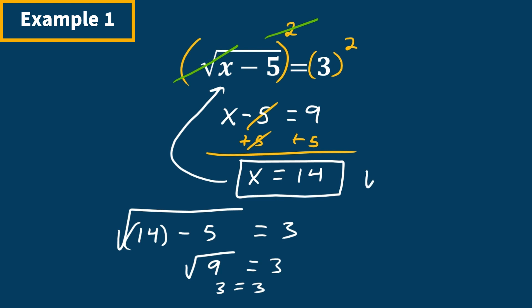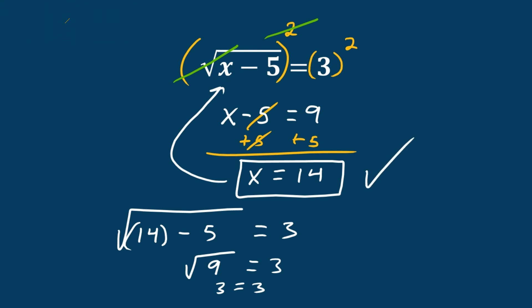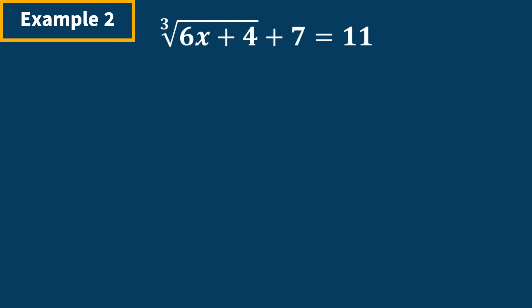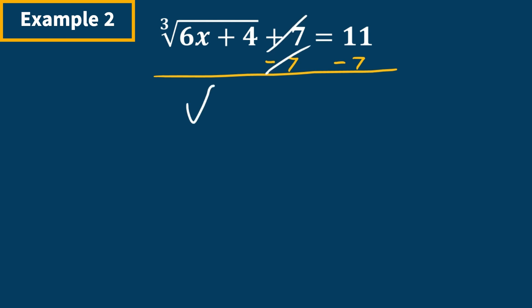Example two: we have the cube root of 6x plus 4, plus 7, is equal to 11. The first thing we want to do is isolate the radical — get it by itself on one side and move everything else over. So we subtract 7 from both sides. The 7s cancel and we have the cube root of 6x plus 4 is equal to 11 minus 7, which is 4.